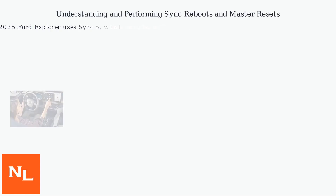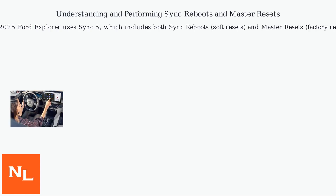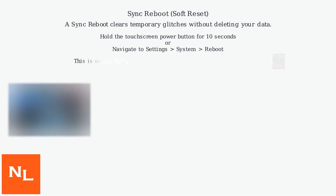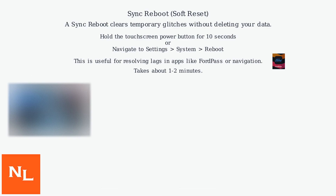The 2025 Ford Explorer uses Sync 5, which includes both Sync Reboots and Master Resets. A Sync Reboot clears temporary glitches without deleting your data. To perform one, hold the touchscreen power button for 10 seconds, or navigate to Settings, System, Reboot.